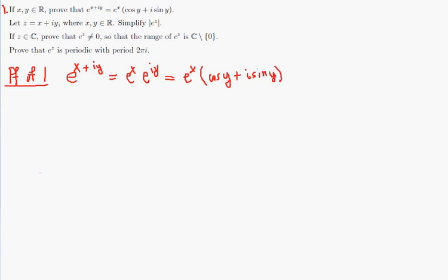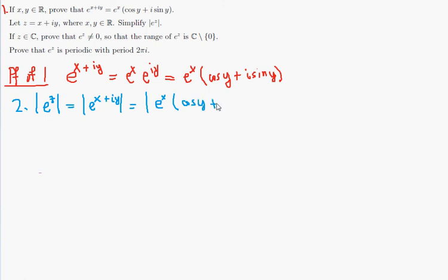And so that's the proof of number 1. Number 2: let's simplify the magnitude of e to the z, or the magnitude of e to the x plus i y. That's equal to the magnitude of e to the x times cosine y plus i sine y. When a number is written in trigonometric form, the magnitude is simply the coefficient, which is the absolute value of e to the x. Because e to the x must be positive, that is simply equal to e to the x.